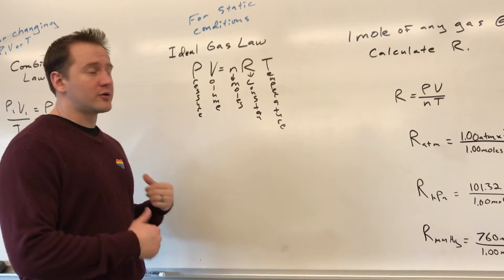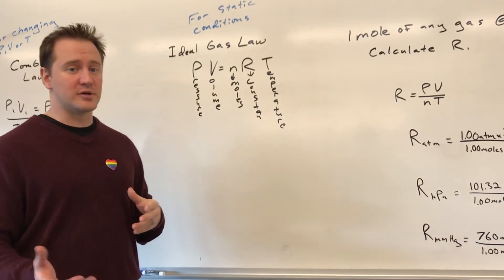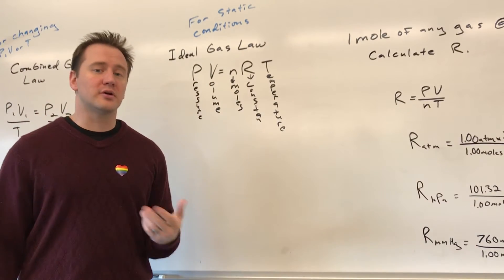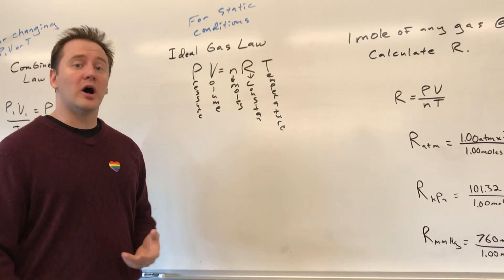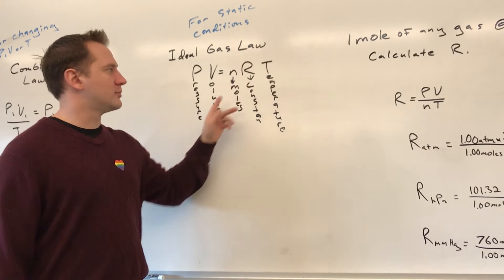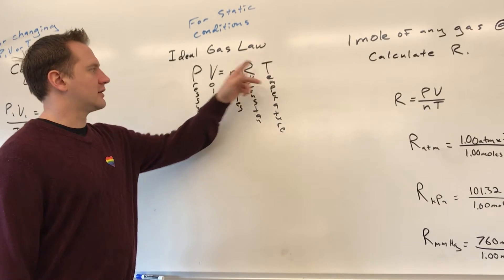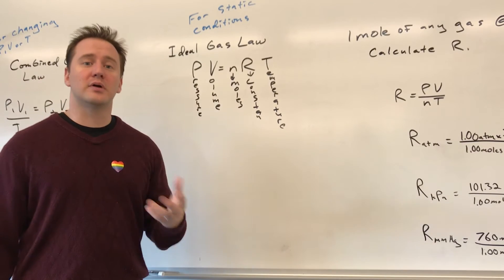Now this, just like the other equation, shows you the relationships that are present. Two variables next to each other are going to have an inverse relationship, like pressure and volume. Two variables on opposite sides of the equal sign, which effectively puts one in the denominator, like temperature related to those two would be a direct relationship.